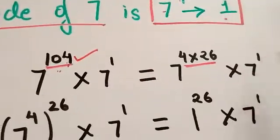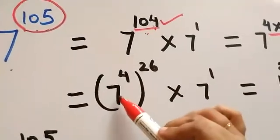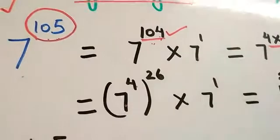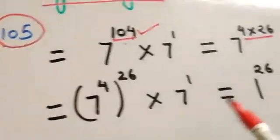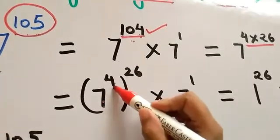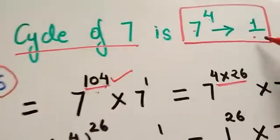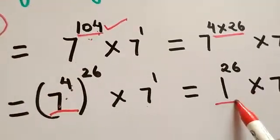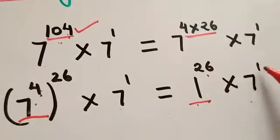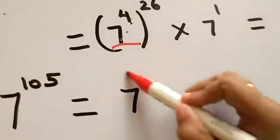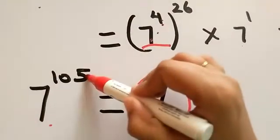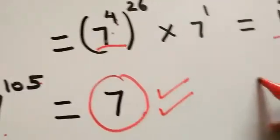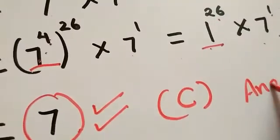We write 7 raised to the power 104 as 7 raised to the power 4, all raised to the power 26, multiplied by 7 raised to the power 1. Since the unit digit of 7 raised to the power 4 is 1, we replace it with 1. So we get 1 raised to the power 26 into 7 raised to the power 1, which gives 7. Therefore, the unit digit of 7 raised to the power 105 is 7, which is option C.